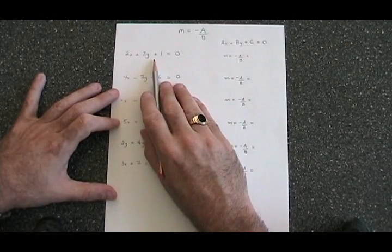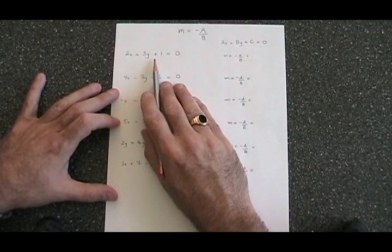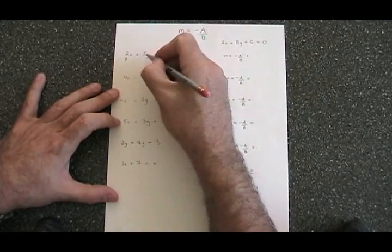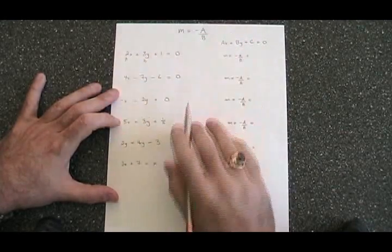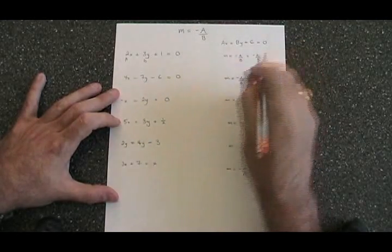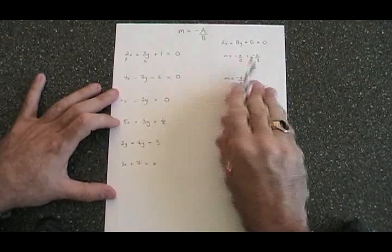This first equation is already in the form ax plus by plus c equals 0. Our a is the 2, our b is the 3. So negative a over b becomes negative 2 over 3. This line has a slope of negative 2 thirds.